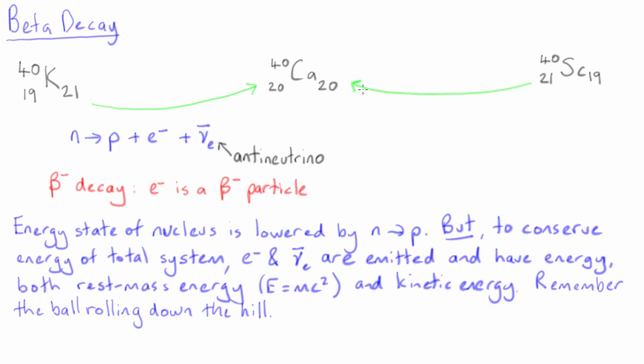The change from scandium-40 to calcium-40 occurs by an analogous process, in this case changing a proton into a neutron, an anti-electron, and an electron neutrino. An anti-electron is usually called a positron, and in the context of this nuclear decay it is also called a beta-plus particle, and this is a beta-plus decay.